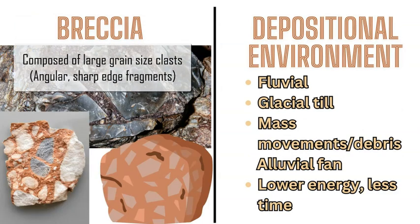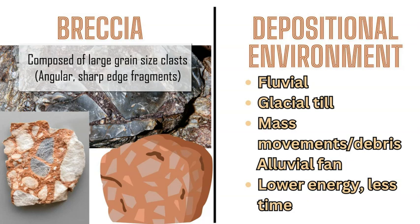Breccia is a very similar rock to conglomerate, but rather than rounded clasts and edges, it has sharper angled edges. This is formed in a lower energy environment with less time, and includes alluvial fans, debris or mass movements, glacial till, or fluvial environments. We can identify where these rocks form based on the clasts and sediments.